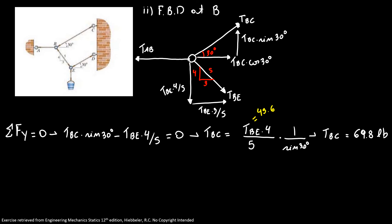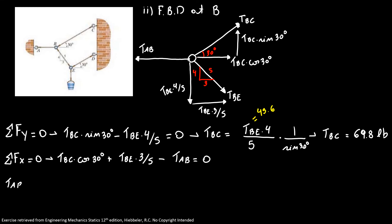Now, the sum of forces in the x-direction equals 0. So, tension BC times cosine of 30 plus tension BE times 3 over 5 minus tension AB equals 0. Tension AB equals tension BC times cosine of 30 plus tension BE times 3 over 5, which is 69.8 times cosine of 30 plus 43.6 times 3 over 5. So, tension AB is equal to 86.6 pounds.